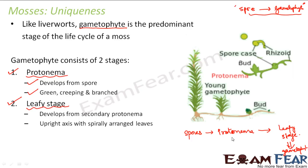This protonema is again divided into two steps: first is primary protonema and then secondary protonema. However, we will not get into the detail of primary and secondary protonema. But this presence of protonema is something unique in mosses and was not present in liverworts.